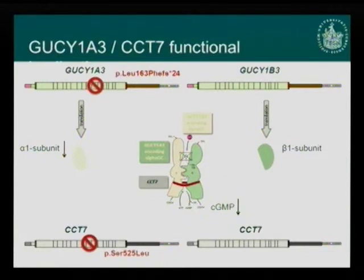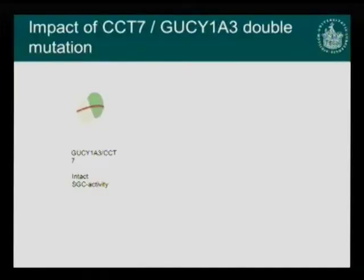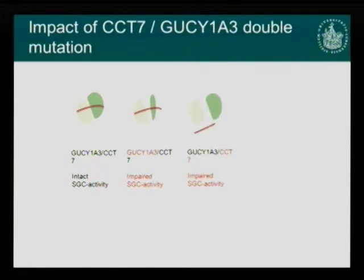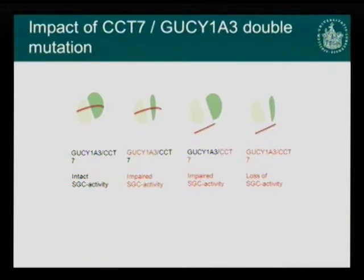If you have a variant in GUCY1A3 or CCT7, you would expect an impaired, unstable complex and reduced levels of cyclic GMP. To explain why a double mutation is so severe, consider the four possible molecular combinations: intact GUCY1A3 and CCT7; malformed GUCY1A3 with correct CCT7; correct GUCY1A3 with altered CCT7; and mutant GUCY1A3 with mutant CCT7. The last three combinations are impaired, and we were able to show a loss of soluble guanylate cyclase activity in our experiments.